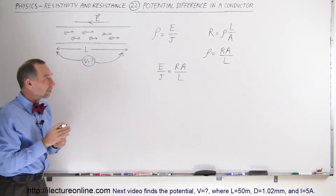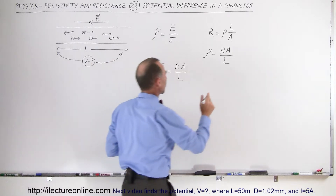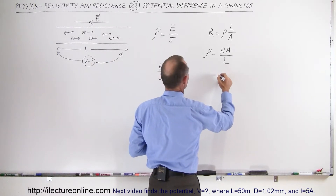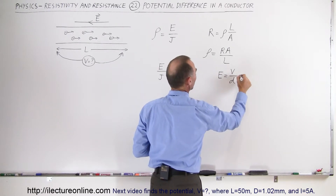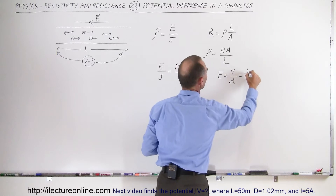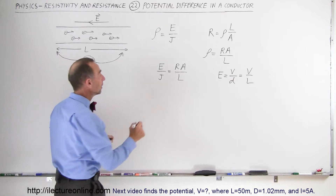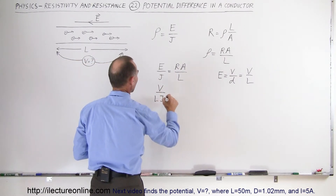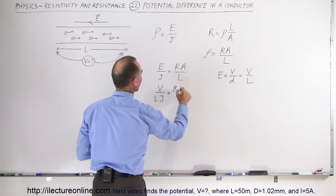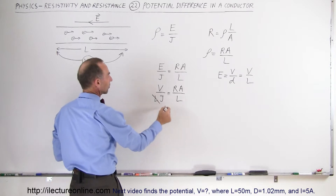We also realize that there's a relationship between the electric field strength and the potential difference across that length of wire. We know that we can express electric field strength in terms of the potential difference divided by the distance between them, and in this case that would be equal to the potential difference divided by the length of the wire. So we can replace E by that and write V divided by L times the current density equals the resistance times the cross-sectional area divided by the length. Right away we can see that the lengths cancel out.